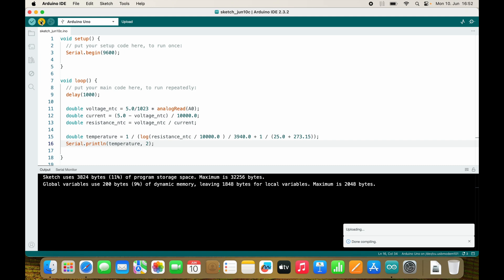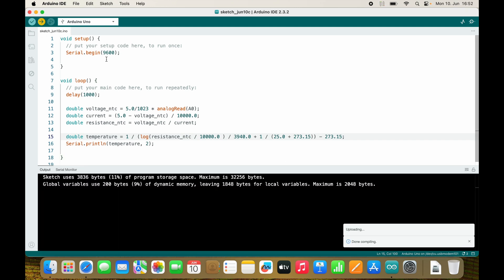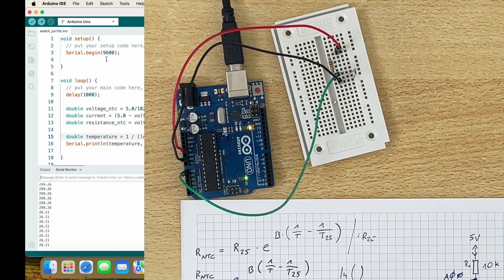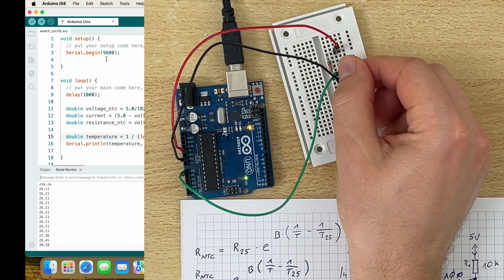So let's print the temperature. Let's see if I made a mistake. Yes, so this is too hot. Of course, this is the temperature in Kelvin. And so what I need to do is I need to subtract 273.15. Yeah, this looks about right. It's very hot in here because of the light. So let's touch it and it goes up. Awesome. I can also cool it down a little bit with my cup of already warm water.